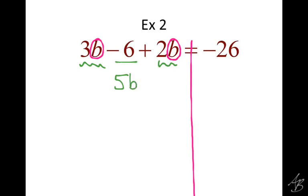Now, what about this negative 6? That's a like term with the negative 26, but should I combine those? No — they're on different sides of the equal sign. So don't combine like terms across the equal sign; they have to stay on the same side. So that negative 6 stays on this side, and the negative 26 stays on that side. Just like solving equations before, we need to simplify and bring down both sides and keep something on both sides of the equal sign. Now this is just a two-step equation.